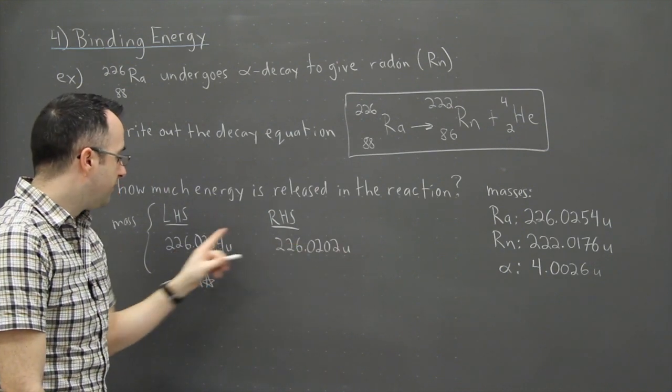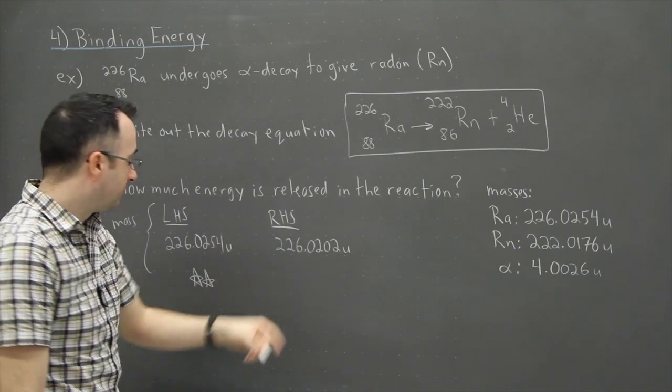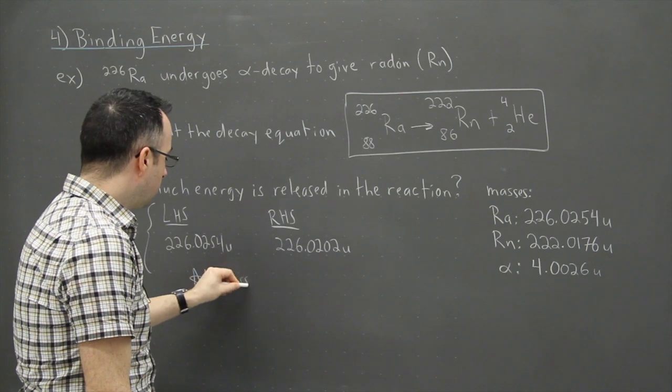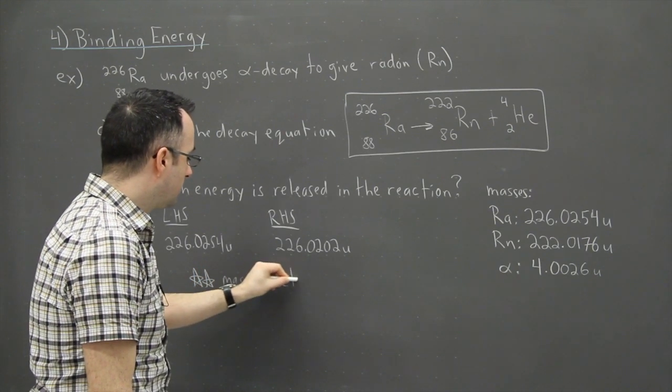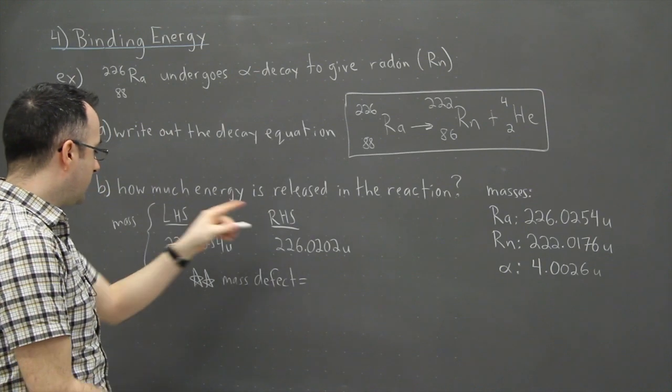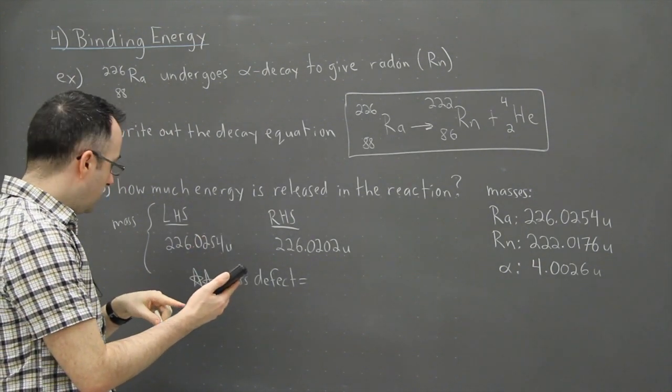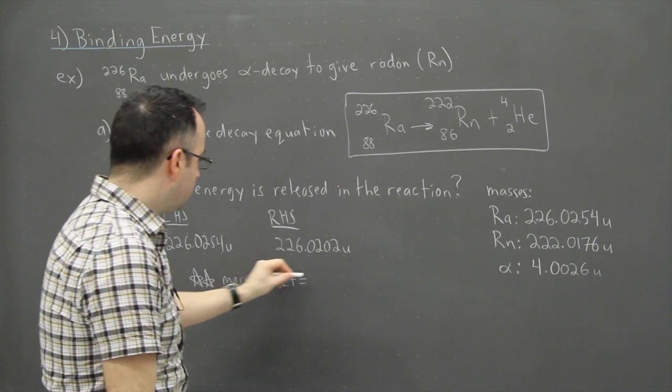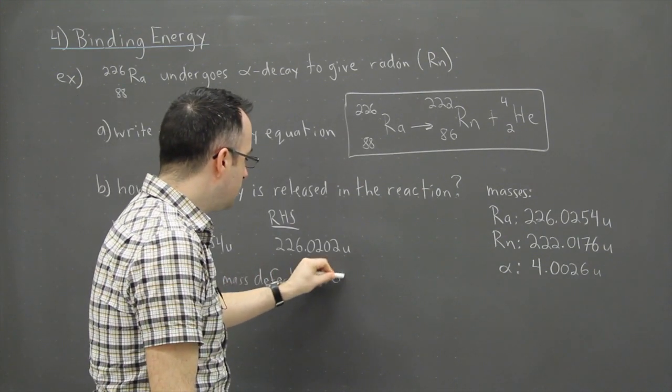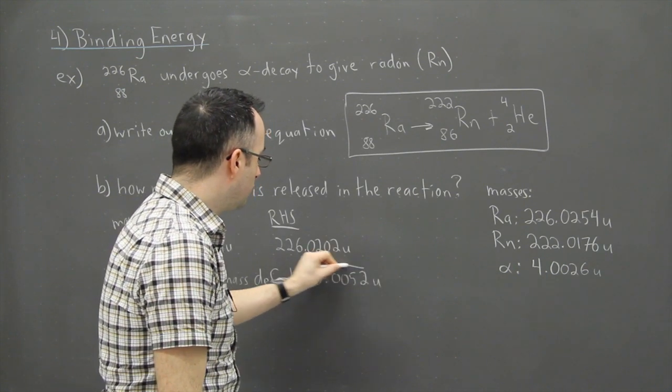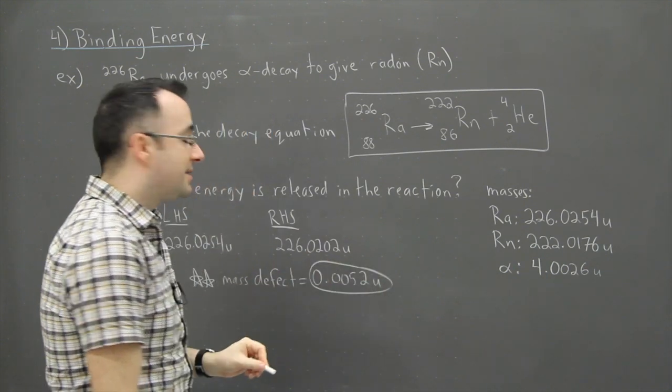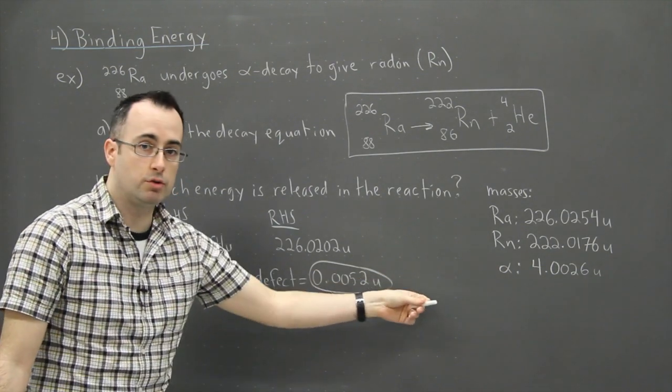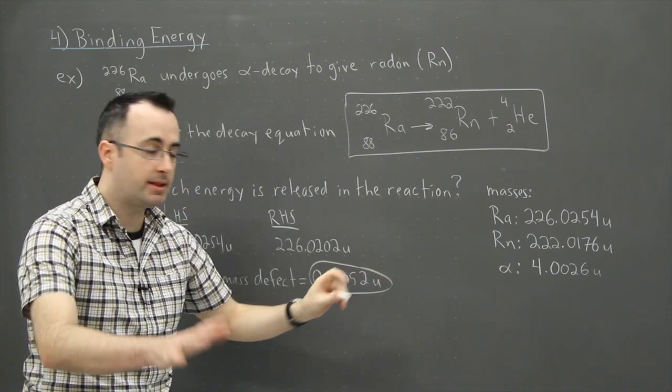So with four decimal places you can see it happening. So then what you could do is say okay, well that means the mass defect, in other words the missing mass, is just going to be this mass minus that one. So 226.0254 minus that answer, and I get 0.0052U. That's the mass defect. Now here's the key thing, we don't need to convert this to kilograms or anything like that. Let's leave it.